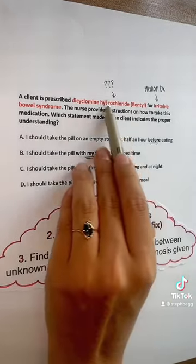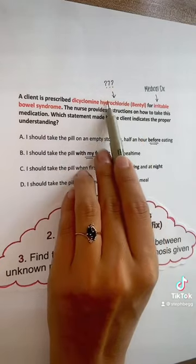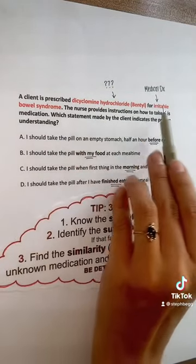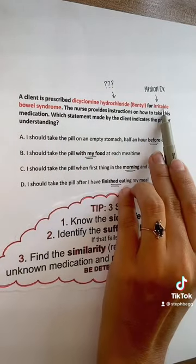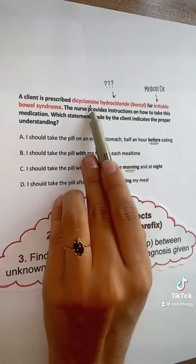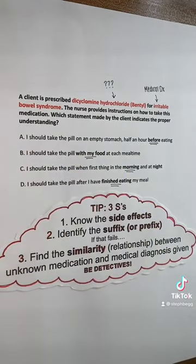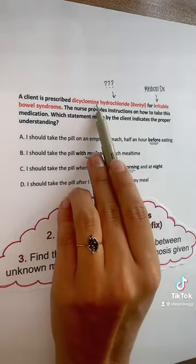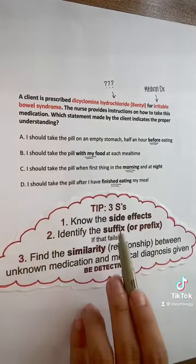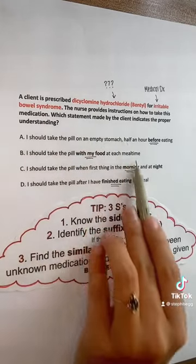Okay, you don't remember the side effects or the suffix. Let's look at the relationship between the medication and the diagnosis given. This unknown med is being given for IBS. We know that IBS can cause sudden bouts of diarrhea, constipation, etc. So if we're giving a med for IBS, we can assume that this is used to relieve the spasms of the GI system.